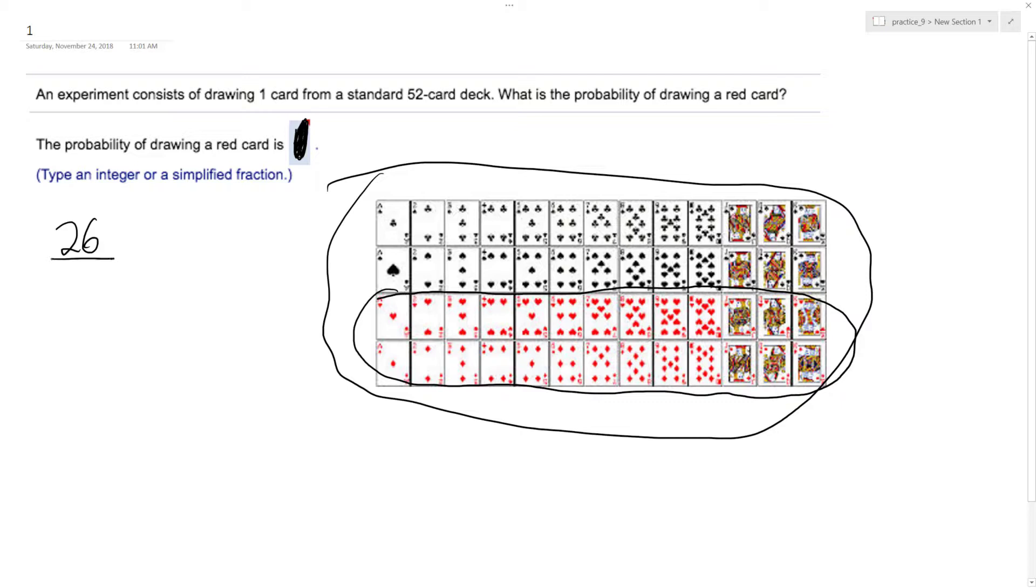And if you reduce this, 26 and 52, greatest common factor is 13. So these reduce down to 13 times 2 over 13 times 4, or 13 times 2. Actually, 26 is the greatest common factor. So 26 times 1 over 26 times 2.